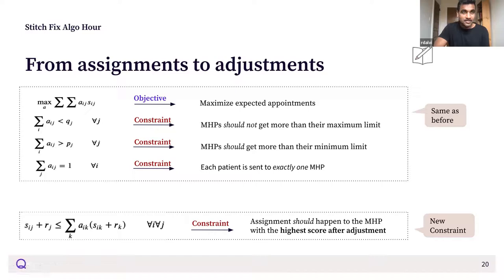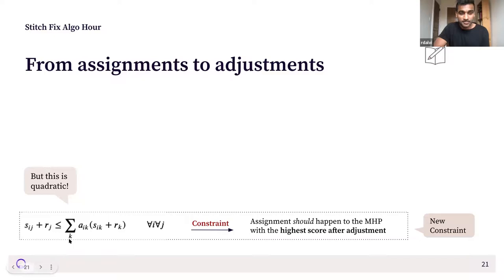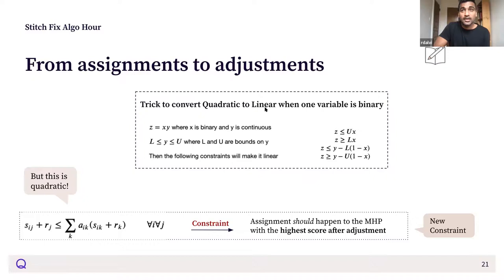We add one more constraint: assignment should go to the MHP with the highest score after adjustment — greedy after adding the adjustment. This means the assignment decision variables are no longer searched directly; instead, what you're searching for are the adjustments themselves. One hurdle is that this formulation is quadratic, meaning it can't be fed directly to a standard linear solver. However, there's a standard trick to convert quadratic to linear when one variable is binary, and we applied that.